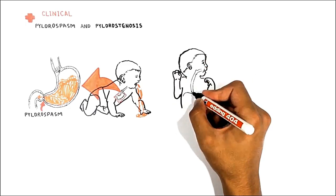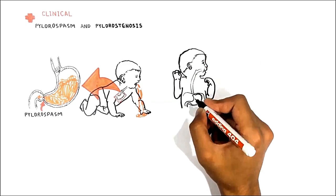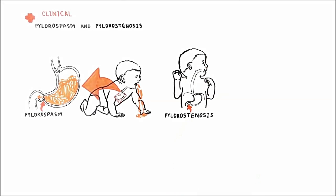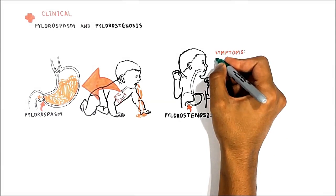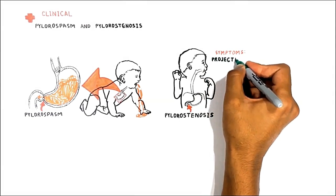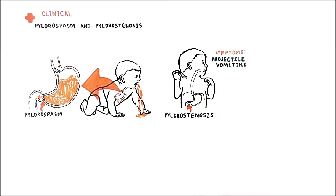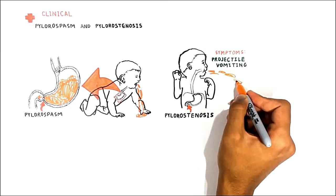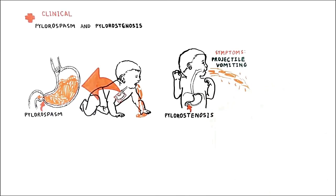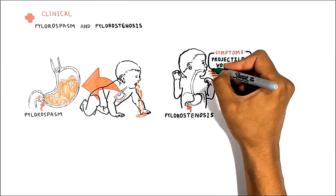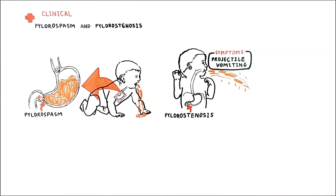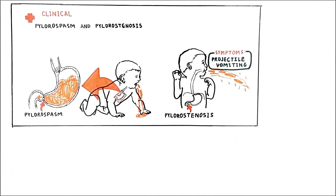Pylorostenosis is similar, but here what you have is a narrowing of the pyloric sphincter. The hallmark symptom is projectile vomiting — the spraying of liquid vomitus some distance from the infant. So remember, projectile vomiting is the key here, not regular vomiting. Pylorostenosis must be corrected only surgically.